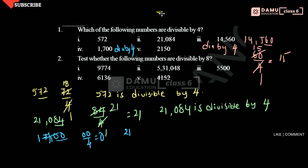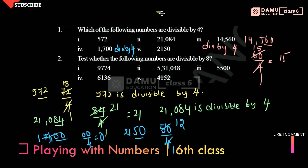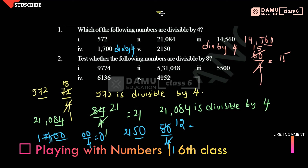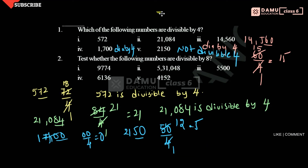Next one is 2150. The last two digits are 50. Is 50 divisible by 4 or not? 4 times 12 is 48, then we get a remainder of 2, so it does not divide evenly. Therefore, 2150 is not divisible by 4, because we get a remainder and it does not come out as a proper whole number.